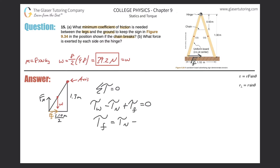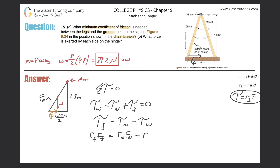Rearranging, the torque due to the frictional force equals the torque of the normal force minus the torque due to the weight. Expanding using τ = r⊥ × F, this becomes: r_f × F_f = r_N × F_N − r_W × W, where all r values are perpendicular lever arms.